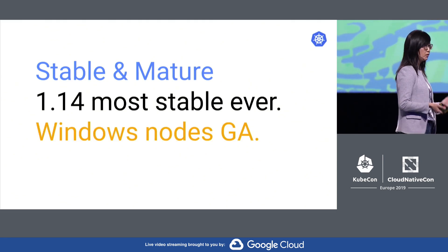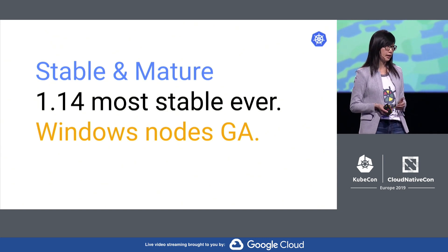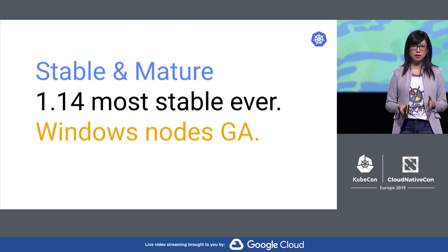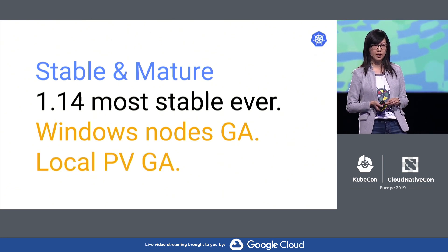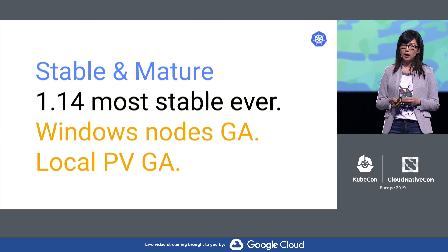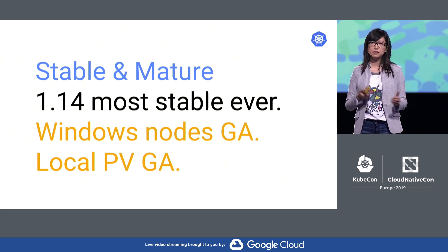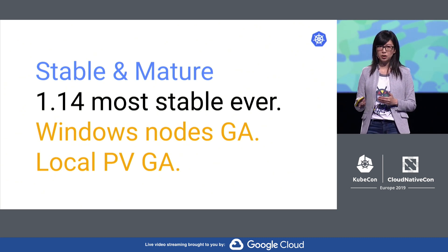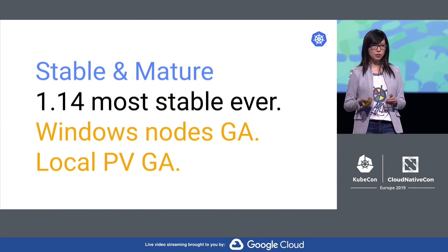The first key feature moving to stable is production support for Windows nodes. Enterprises can now manage both Windows-based and Linux-based applications in a single orchestrator — Kubernetes. This means better operational efficiencies. Local persistent volume is another important feature going to stable. For on-prem, if you're running distributed file systems or databases, it gives you better performance using local SSDs rather than remote disks, and it's also cheaper. This is a huge improvement for running stateful workloads in Kubernetes.